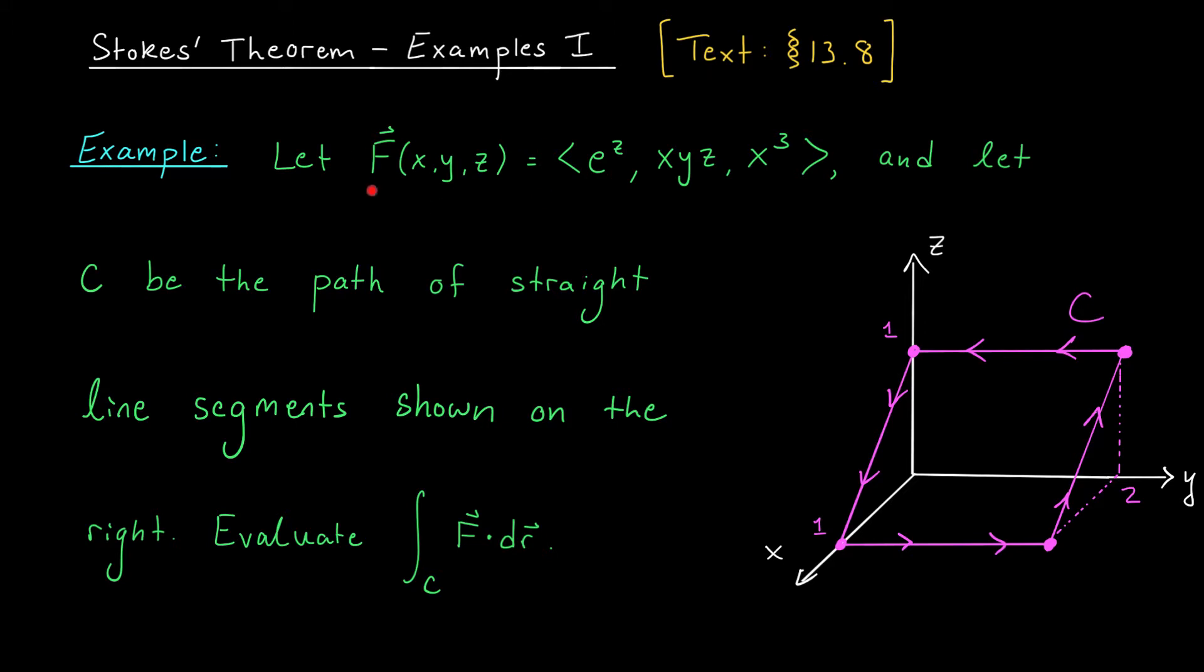We're given a vector field F(x,y,z) equals <e^z, xyz, x³>, and a path C consisting of straight line segments shown on the right. So our path seems to be forming this rectangle in R³.